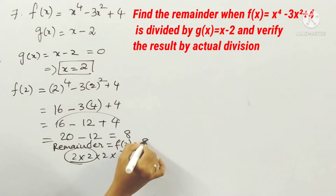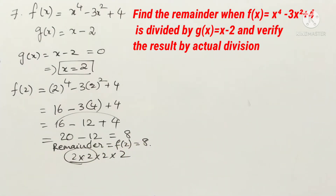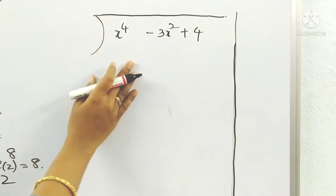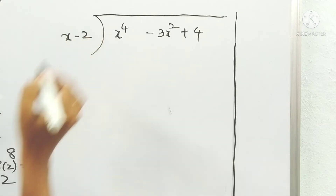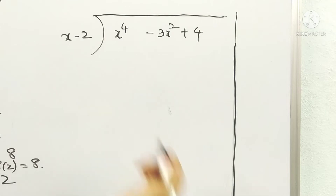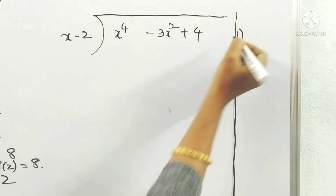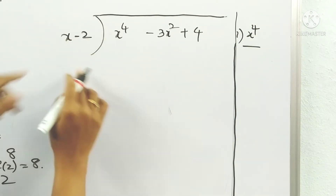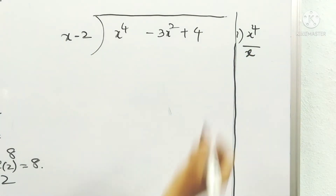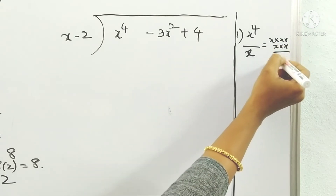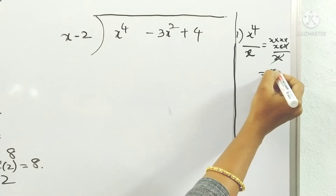Now we have to check this by the process of long division, that is actual division of polynomials. f(x) is the dividend and g(x) is the divisor. For the first term in the quotient, take the highest degree term of the dividend and divide by the first term of the divisor.